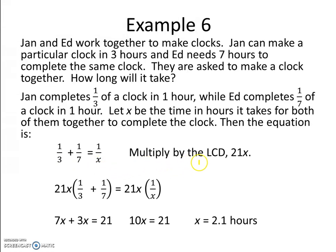Just like we did before, we're going to multiply by the least common denominator. The least common denominator of 3, 7, and x is 21x. So multiplying the equation by 21x,